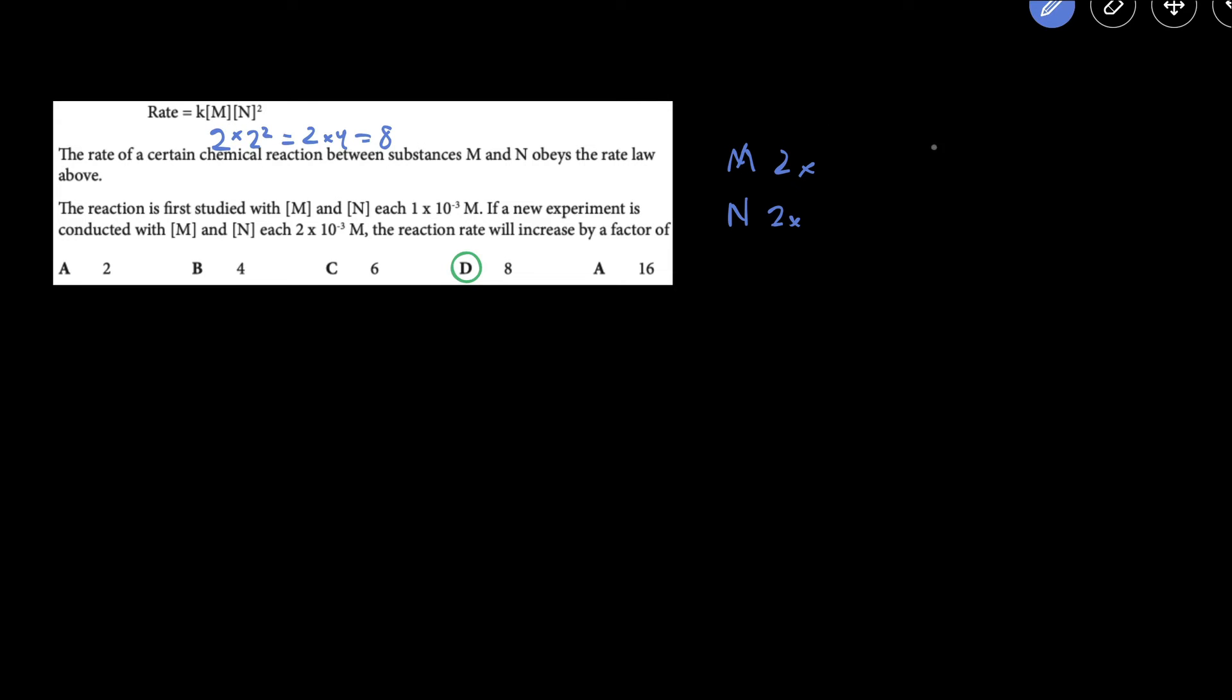Well, when we double the concentration of M, that's going to double the rate because it's to the first power. And then when we double the concentration of N, that's going to increase the rate 4 times because that's to the second power or second order. So then in total, this is M times N, the rate will increase by 8 times.